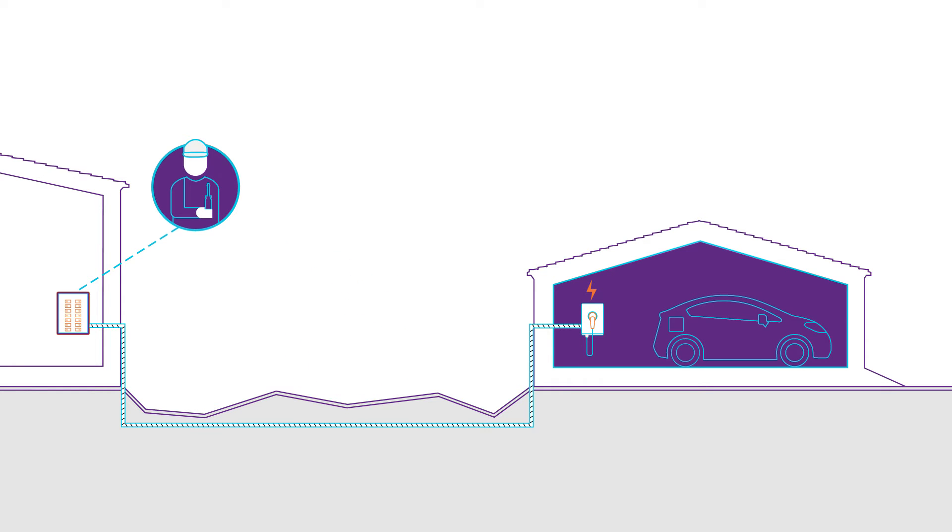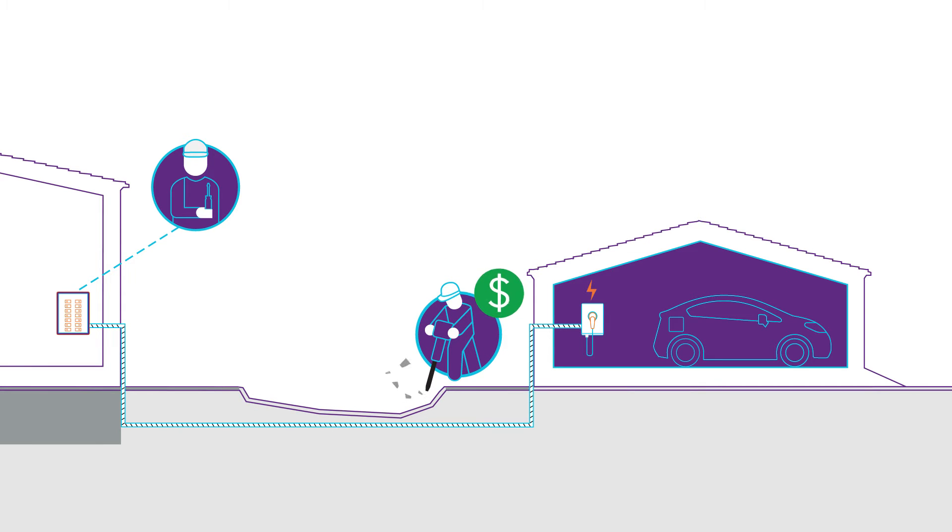To that end, what if instead of dirt or a lawn, there's a concrete pad between the service panel and the charging location? It might need to be cut or broken out and repaired after the circuit is laid. That might be a different contractor.